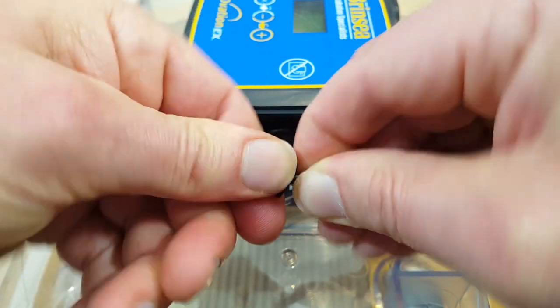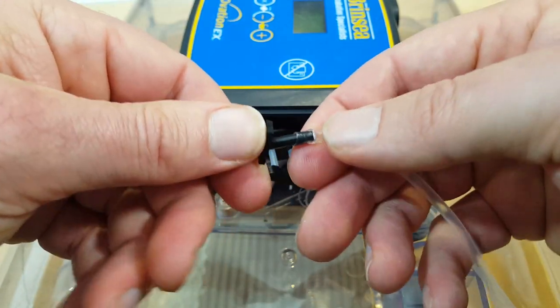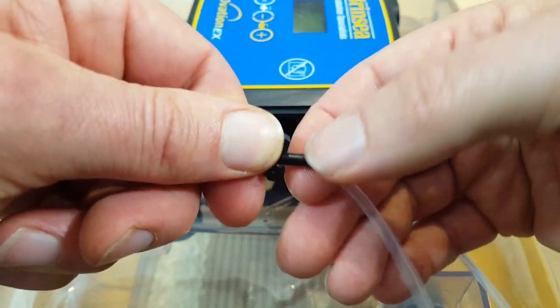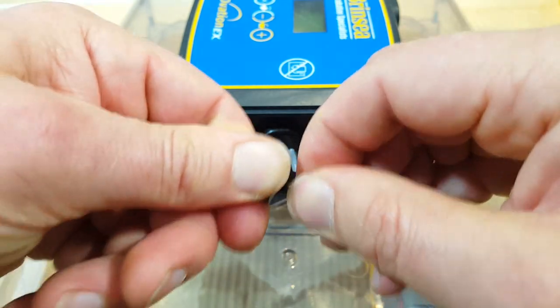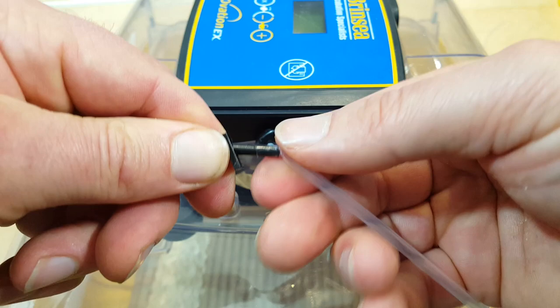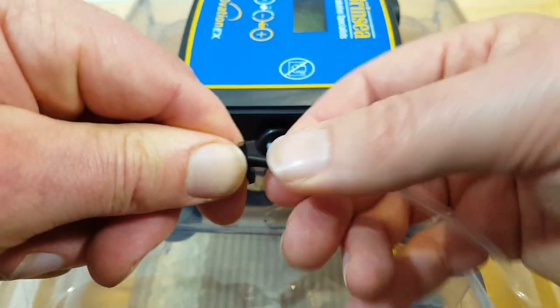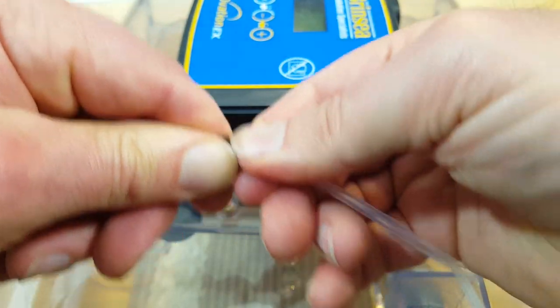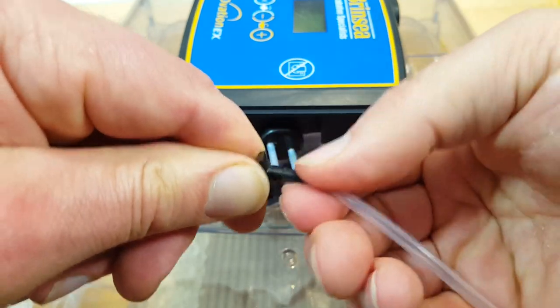When fitting the tubing to the black pump connector nozzles, don't pinch it with your nails. This can split the tubing and allow air to get in which means the pump will no longer be able to pull water through the tubing. Gently massage the tubing onto the nozzles.